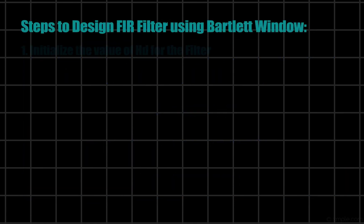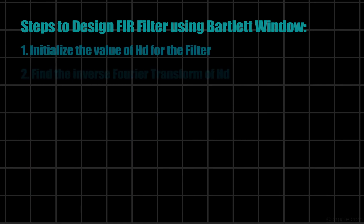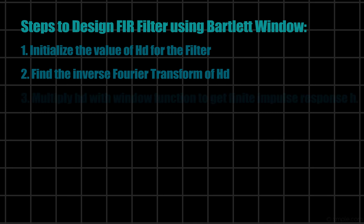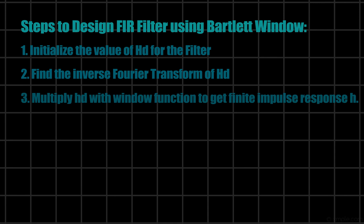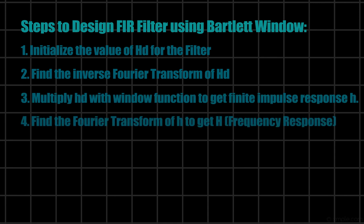Steps to design a FIR filter involve: first we initialize the value of HD. Then we do the inverse Fourier transform to get the infinite impulse response. We multiply it with the window function to get finite impulse response. Further, we can get h by finding Fourier transform of infinite impulse response.